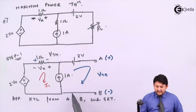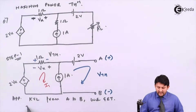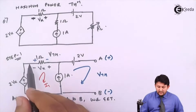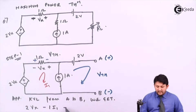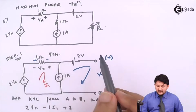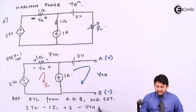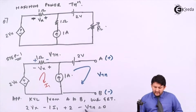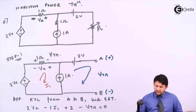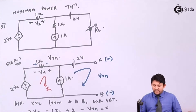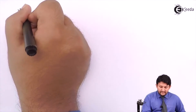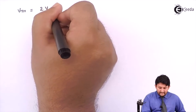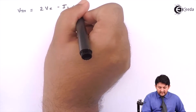Going clockwise: it enters into negative so it will be positive; it enters into positive so it will be negative; it enters into negative so it will be positive; it enters into positive so it will be negative. So your negative Vth, if you shift it over, you will be getting positive. The equation you will be getting is: shift Vth to that side, so you will be getting Vth equal to 2Vx minus I1 plus 2.